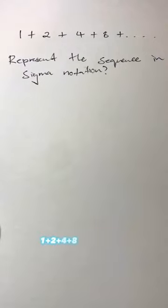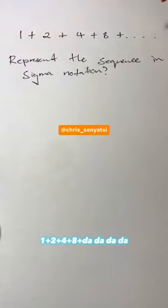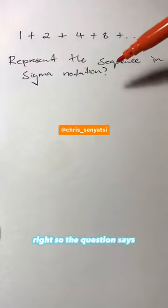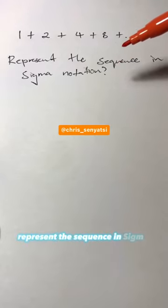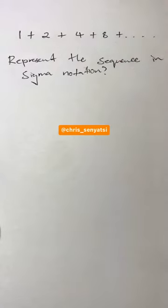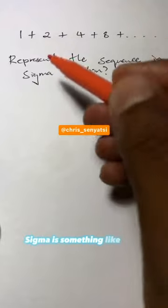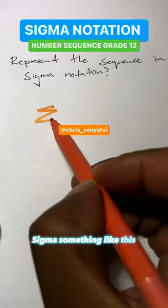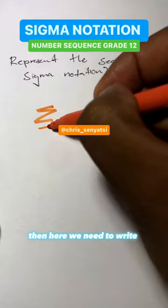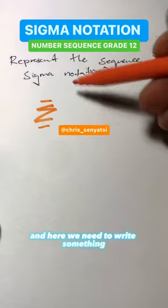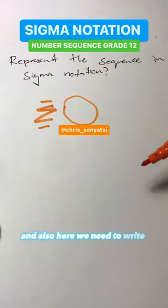1 plus 2 plus 4 plus 8, and so on. The question says represent the sequence in sigma notation. Sigma notation looks like this - we need to write something at the top, at the bottom, and after the sigma symbol, but we don't know what those things are yet.